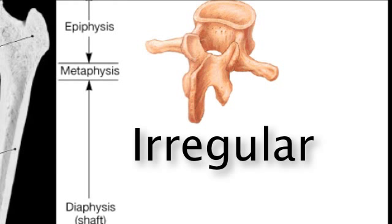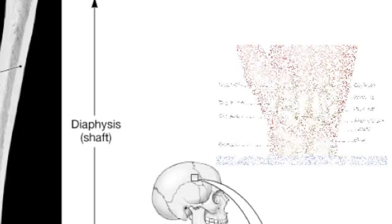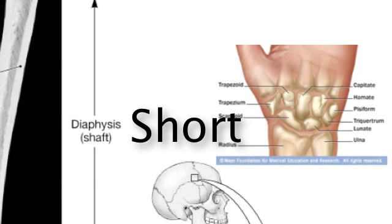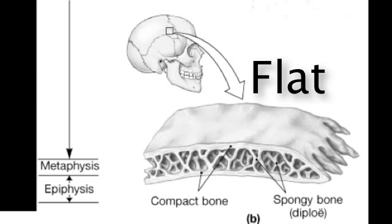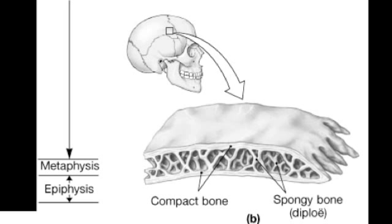Other bone shapes are classified as irregular, like this vertebra. We also have short bones, like the bones of the wrist called the carpals. And then there's flat bone, like the skull plates — you can see the compact bone on the outside and the spongy bone on the inside.